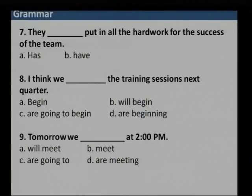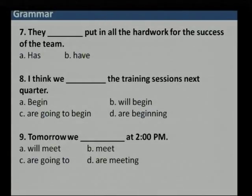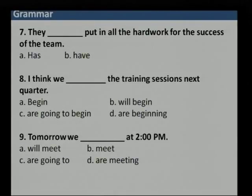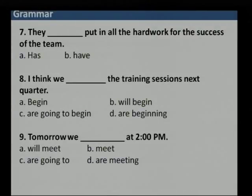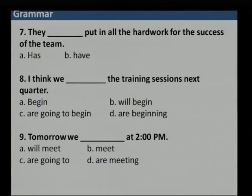Question 9: 'Tomorrow we dash at 2 pm.' Option C — 'we are going to meet' — is not needed. Option D — 'we are meeting' — is present continuous and incorrect for a future time reference. Option A is correct: 'tomorrow we will meet at 2 pm.'